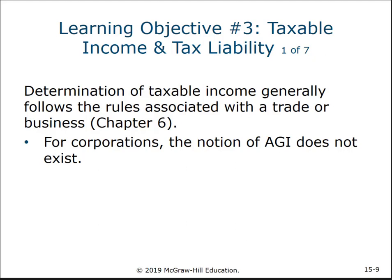When determining taxable income, corporations generally follow the same rules as any trade or business — the same IRS and court rulings about whether an expense is necessary and reasonable apply regardless of whether the entity is a C corp, S corp, partnership, or sole proprietorship. There is no AGI concept for corporations like there is for individuals — there's no intermediate step that limits certain deductions the way adjusted gross income does in personal taxes.